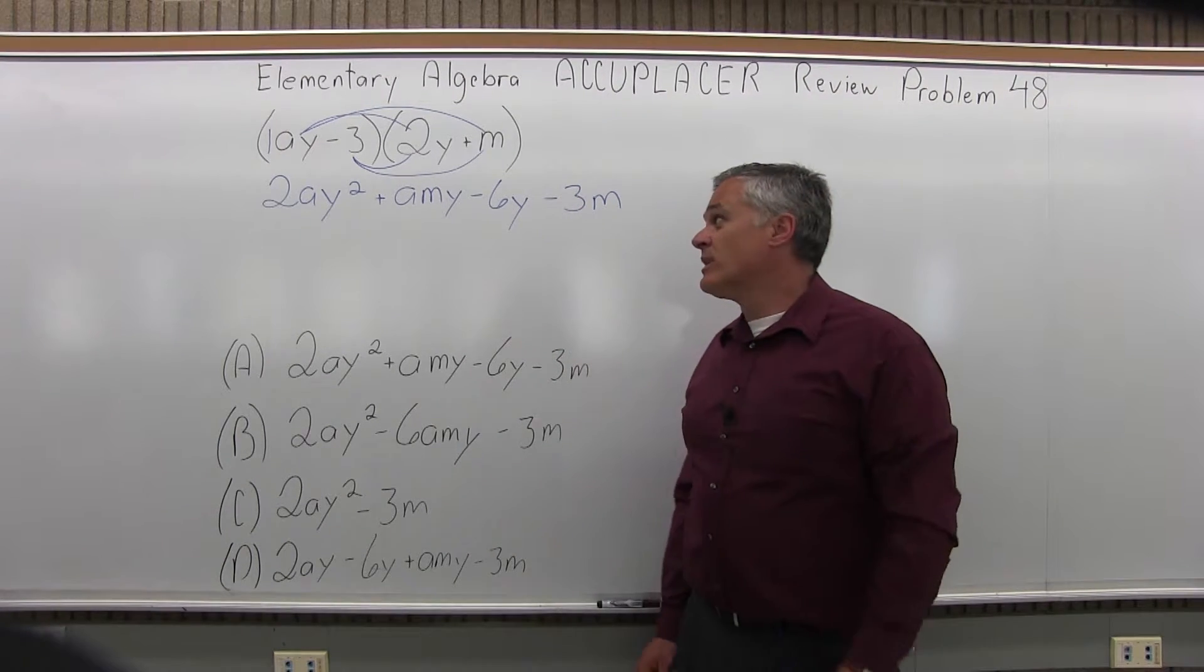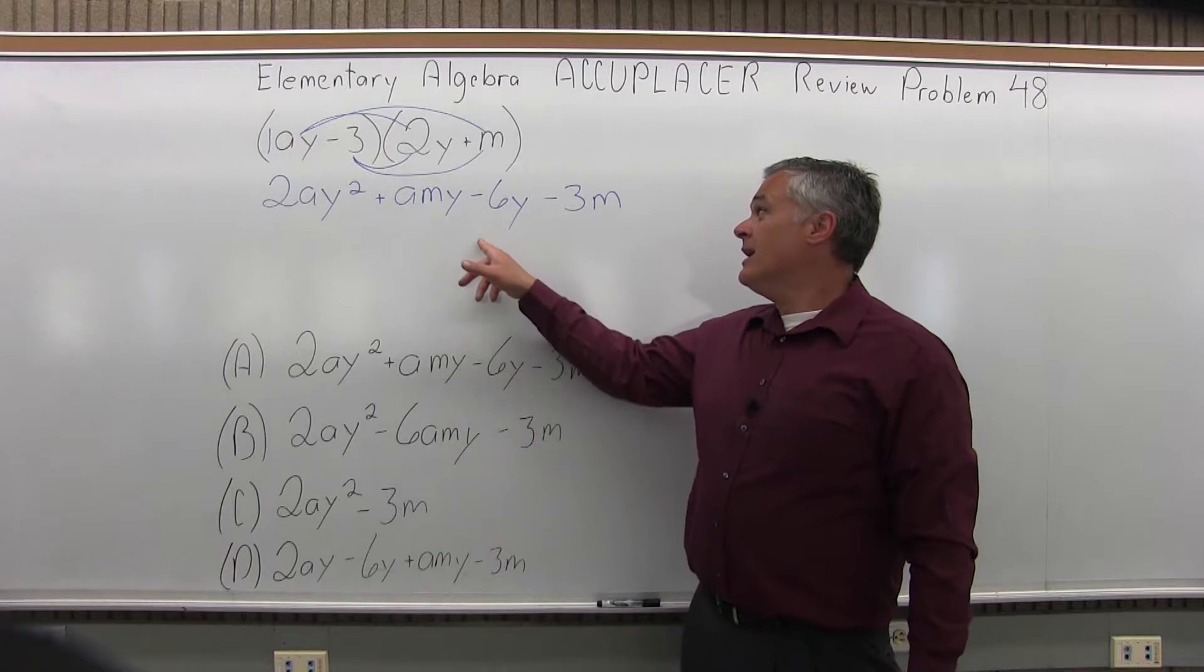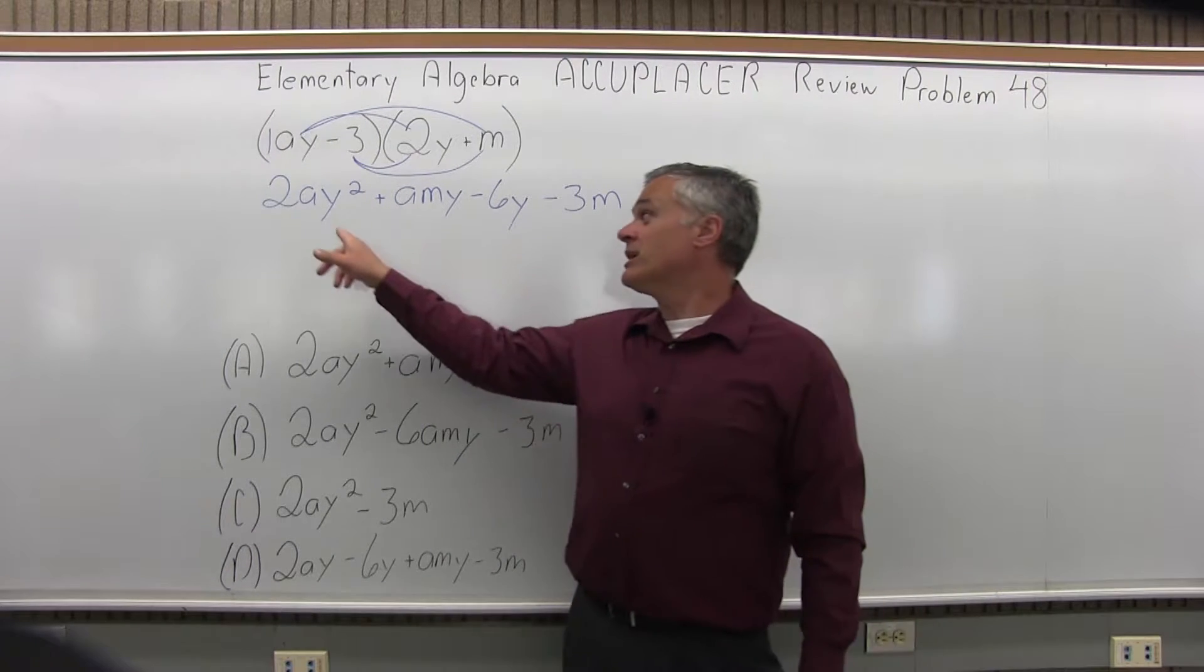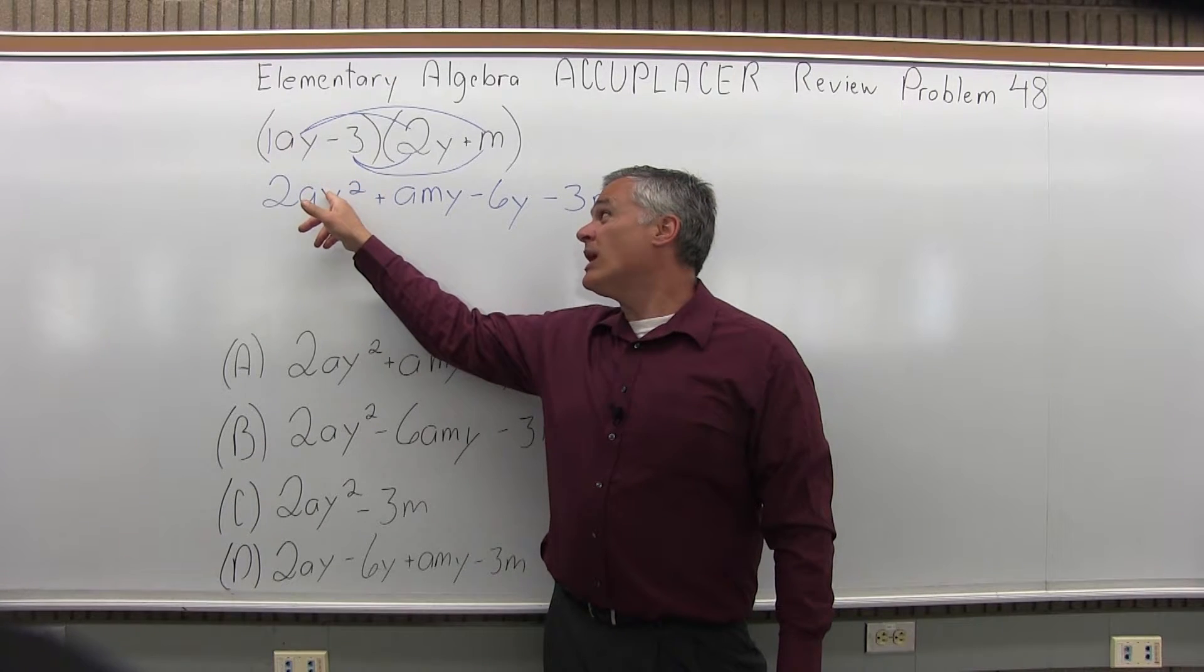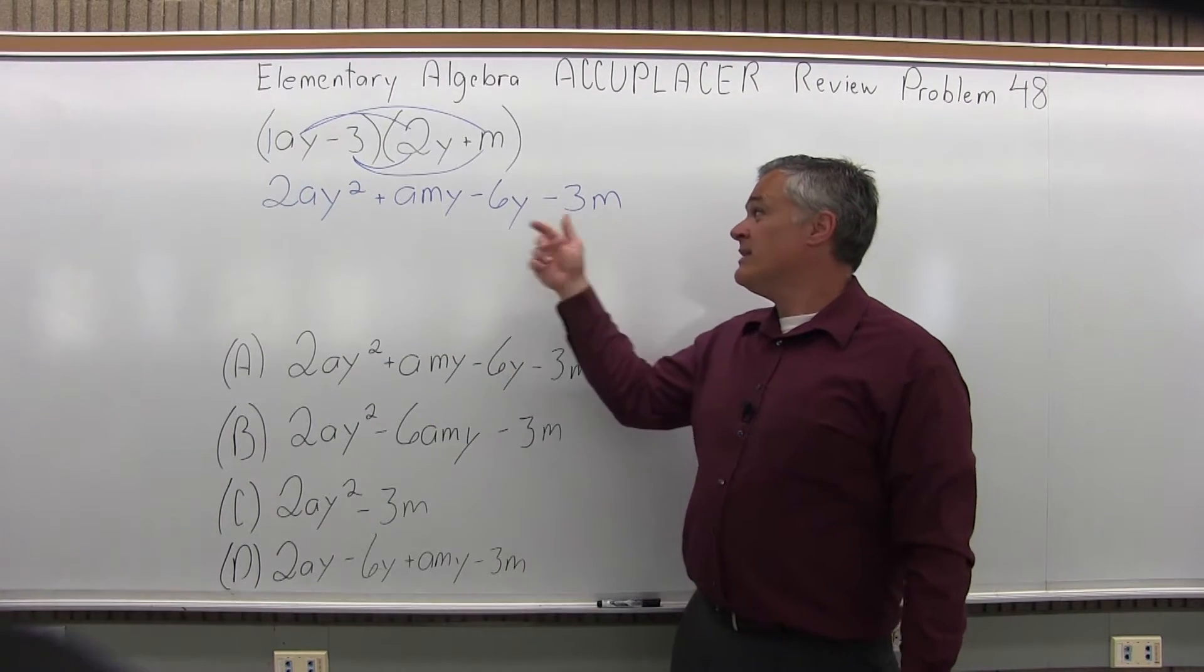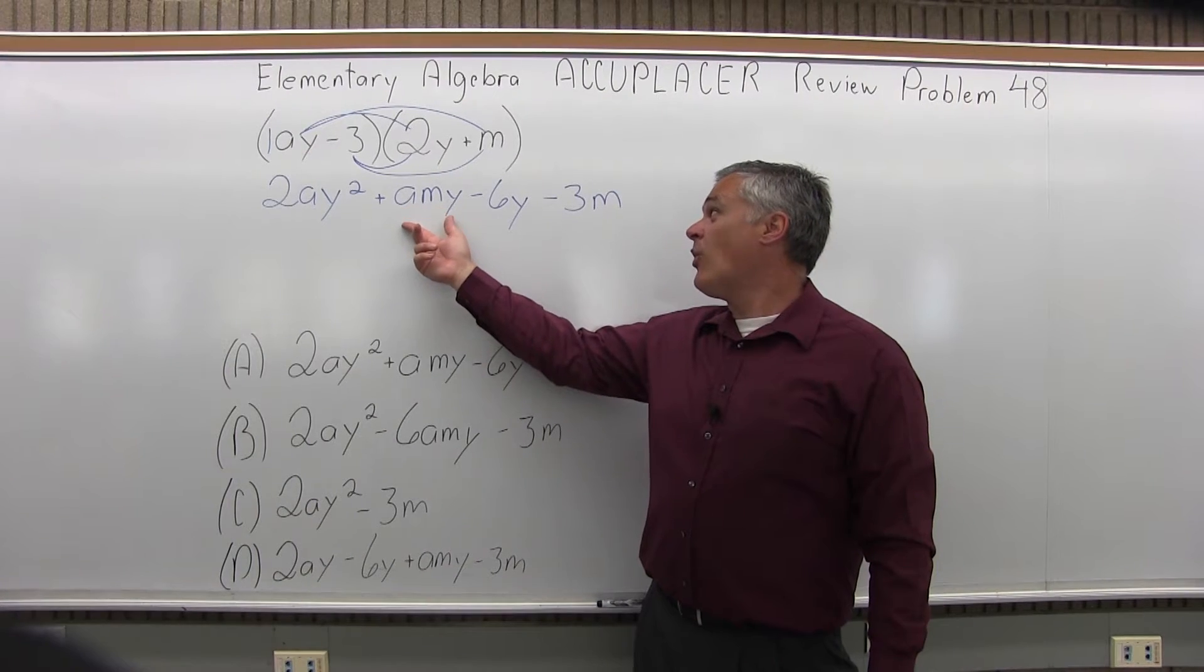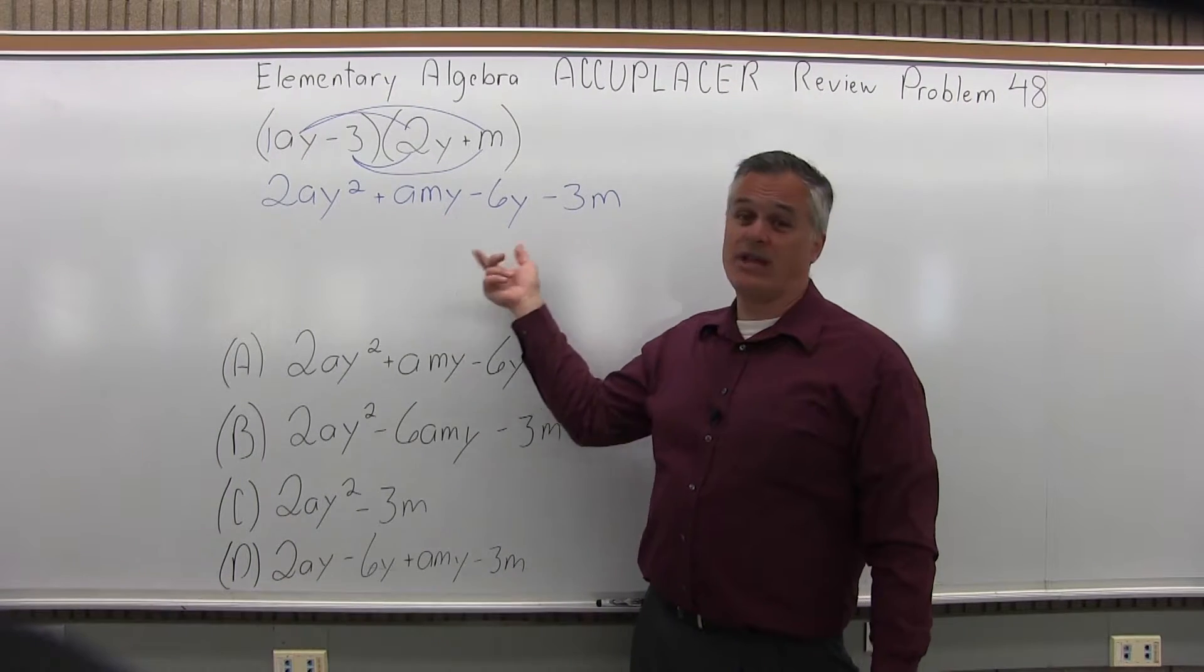Now at this point, typically we combine whatever we can combine. Nothing really combines. If you look at the variables and their exponents, I have an AY squared in the first piece, no other AY squared. The next piece, A, M, Y, all first power, no other AMY.